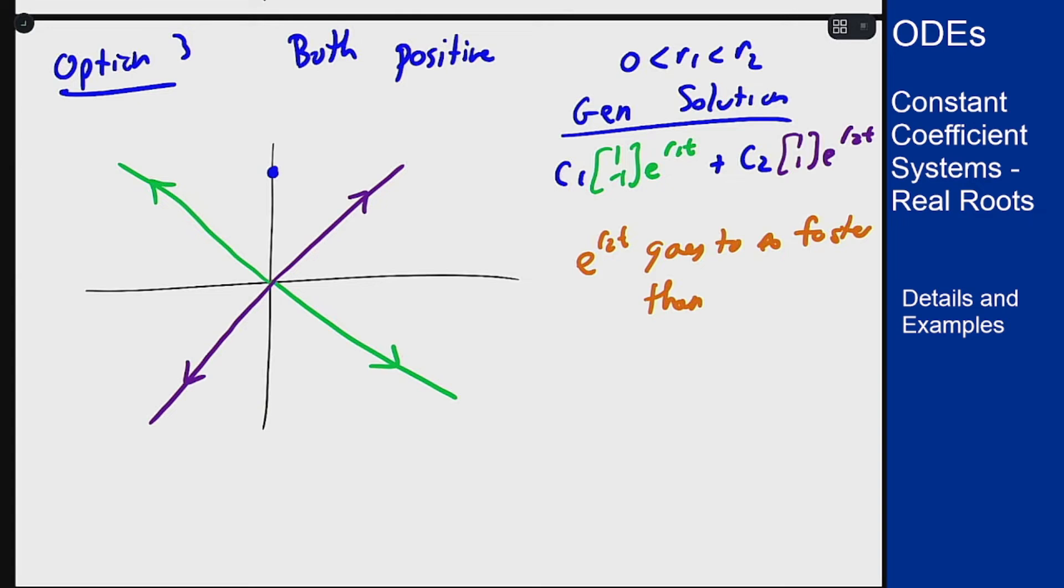This means that it's more important as t goes to infinity in the sense that if I were to take the ratio of x and y here it would match the ratio from the c2 term more than the c1 term because the c1 term here is getting bigger but it's not nearly as big as the c2 term.